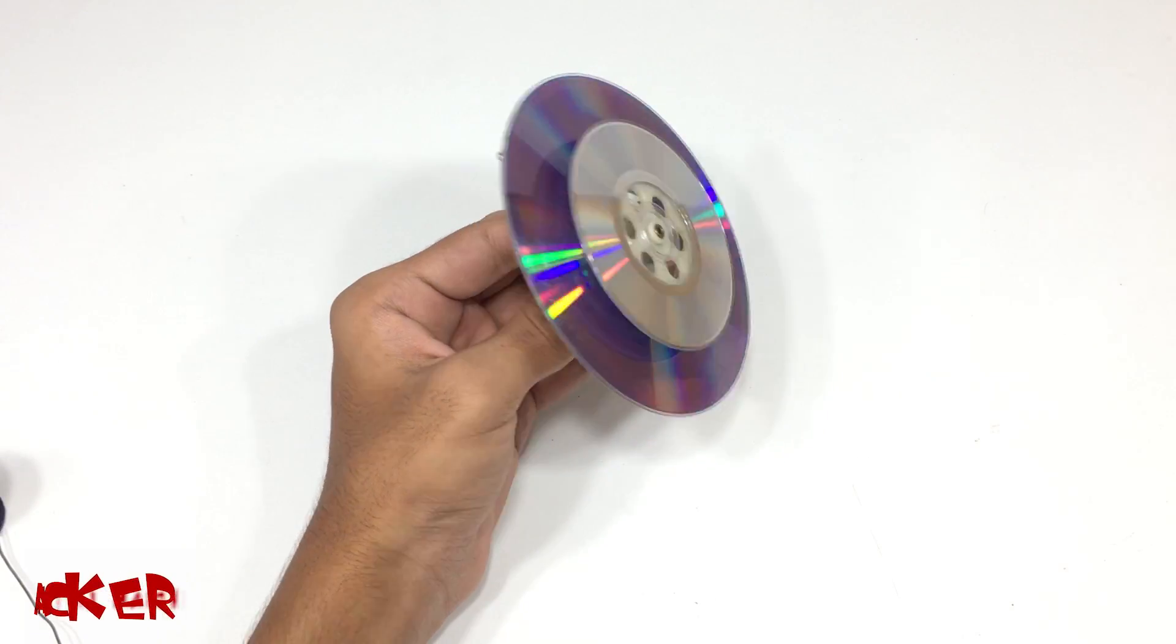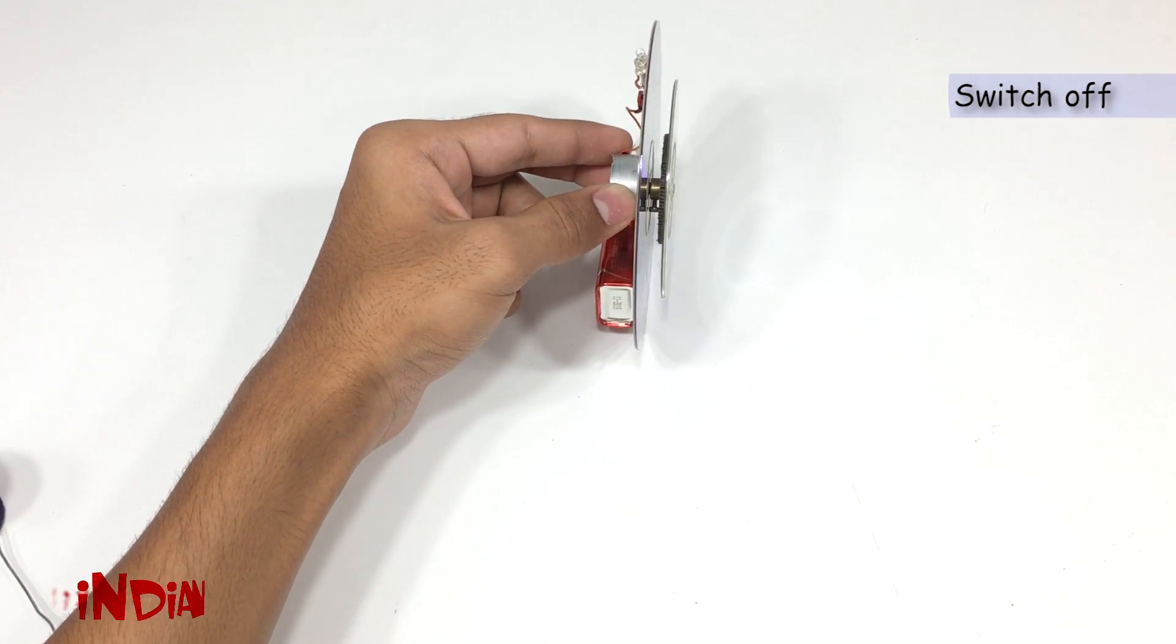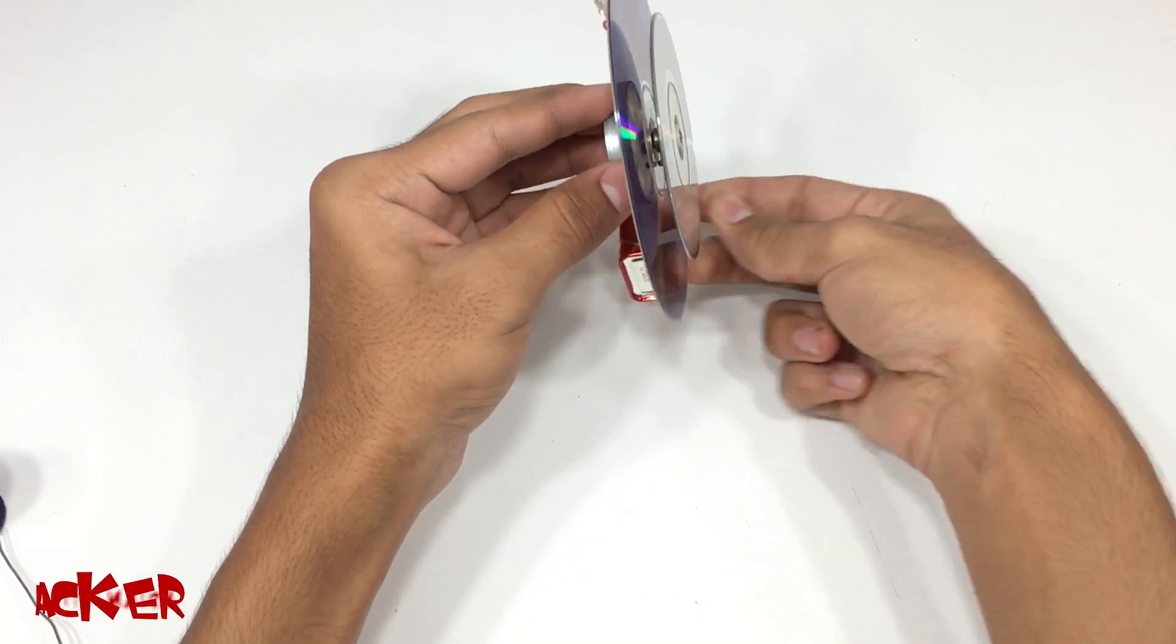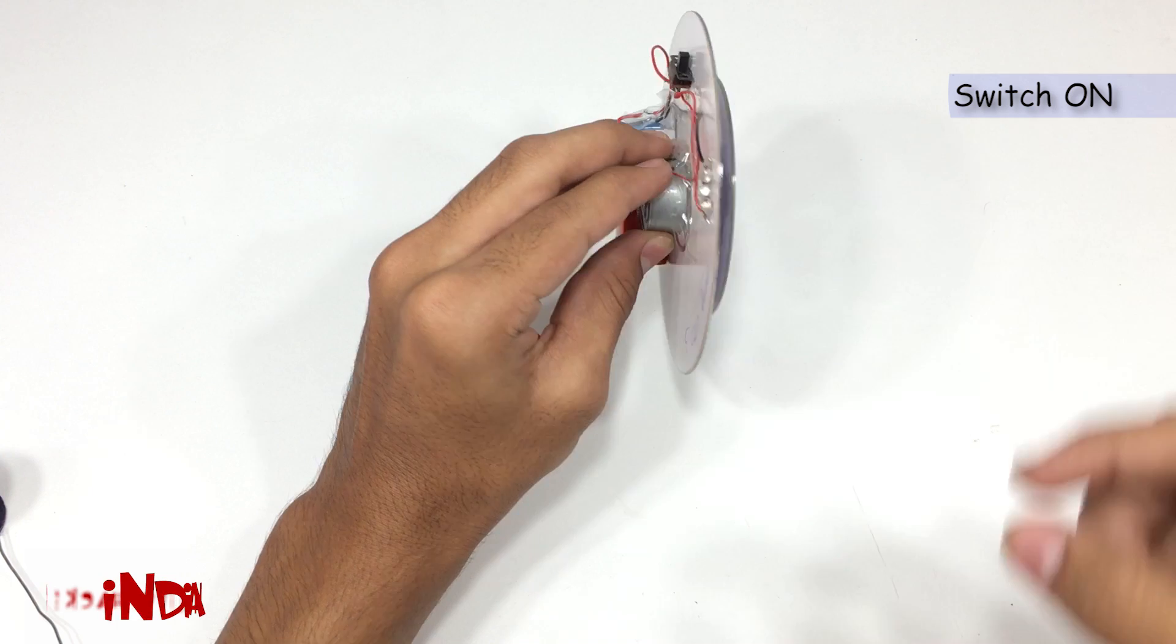Without turning on switch, anti-gravity wheel obviously falls down. But what happens when we turn it on? Here it is.